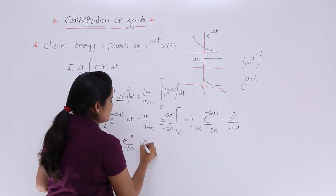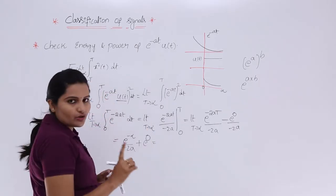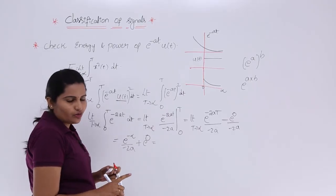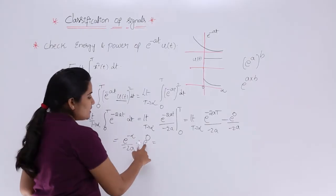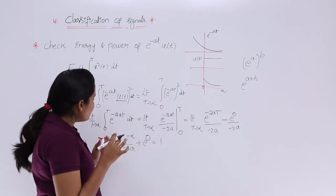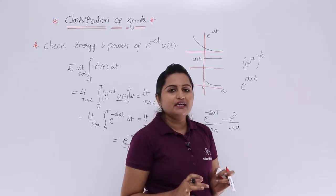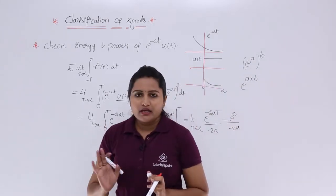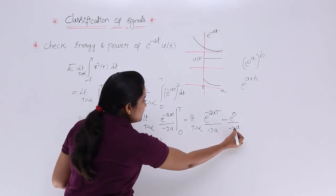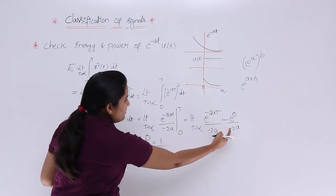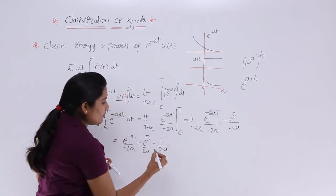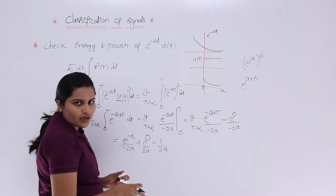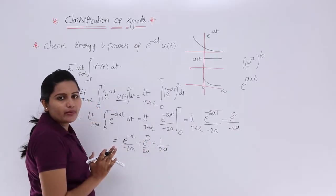As T tends to infinity, e^(-2AT) becomes e^(-∞), which equals 0. So 0/(-2A) = 0. The remaining term is e^(0)/(-2A), but with the minus sign from subtraction it becomes +e^(0)/(2A). Since e^(0) = 1, the energy equals 1/(2A) — which is a finite value. Therefore, this is an energy signal with energy 1/(2A) joules.